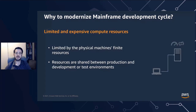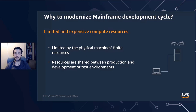The second reason is limited and expensive compute resources. Mainframes can be expensive and are limited by the physical capacity available on site. In some situations, customers share hardware between production, development, and test systems. When they do, resources can be even more scarce, and in high-demand periods like end of year or end of quarter, the test and development systems may receive even less CPU capacity, slowing down processing and the development cycle.